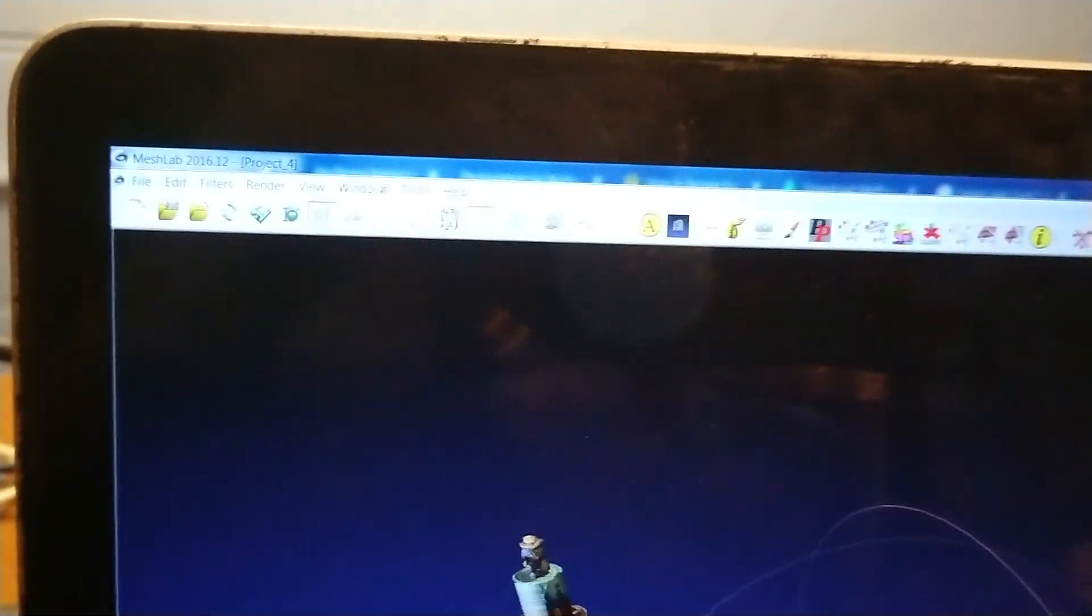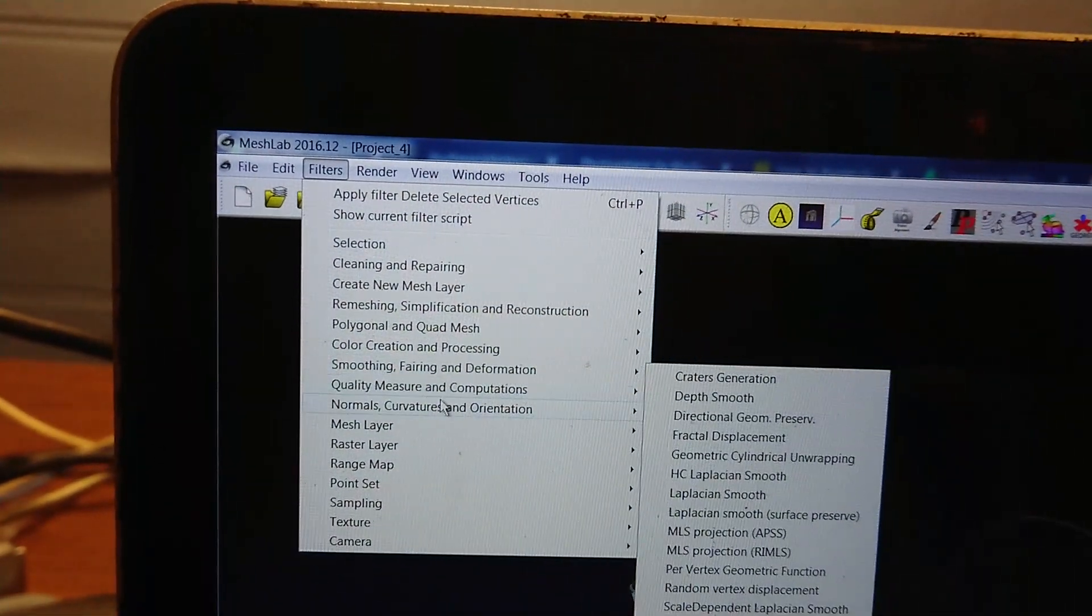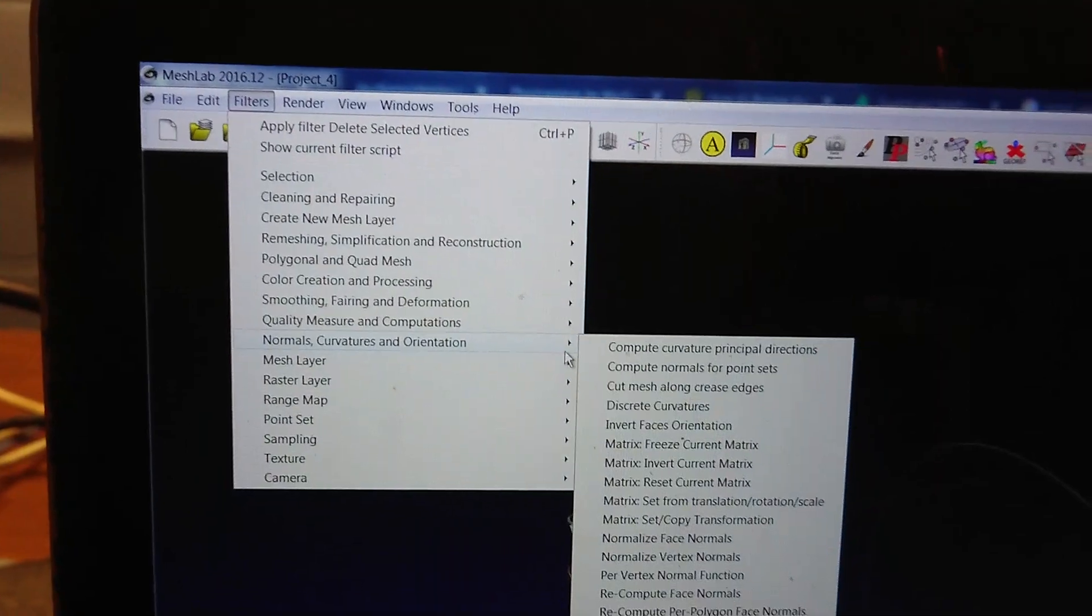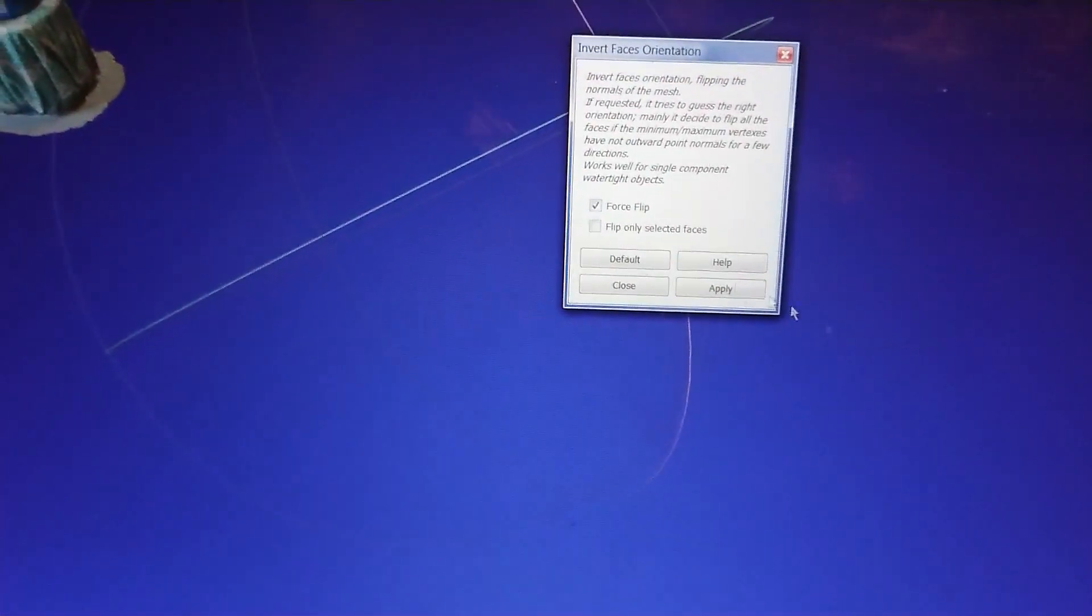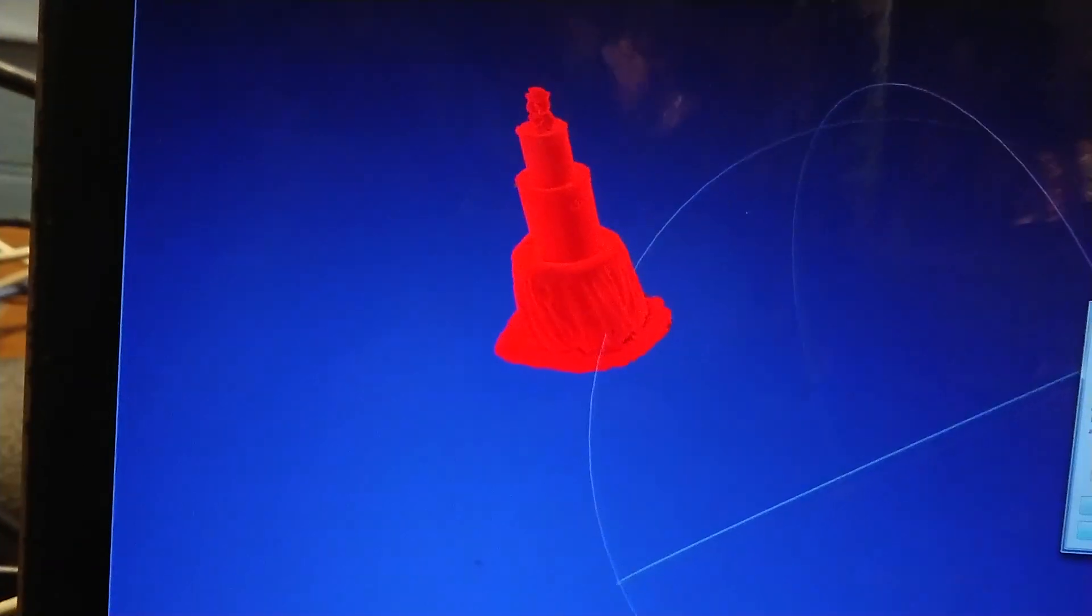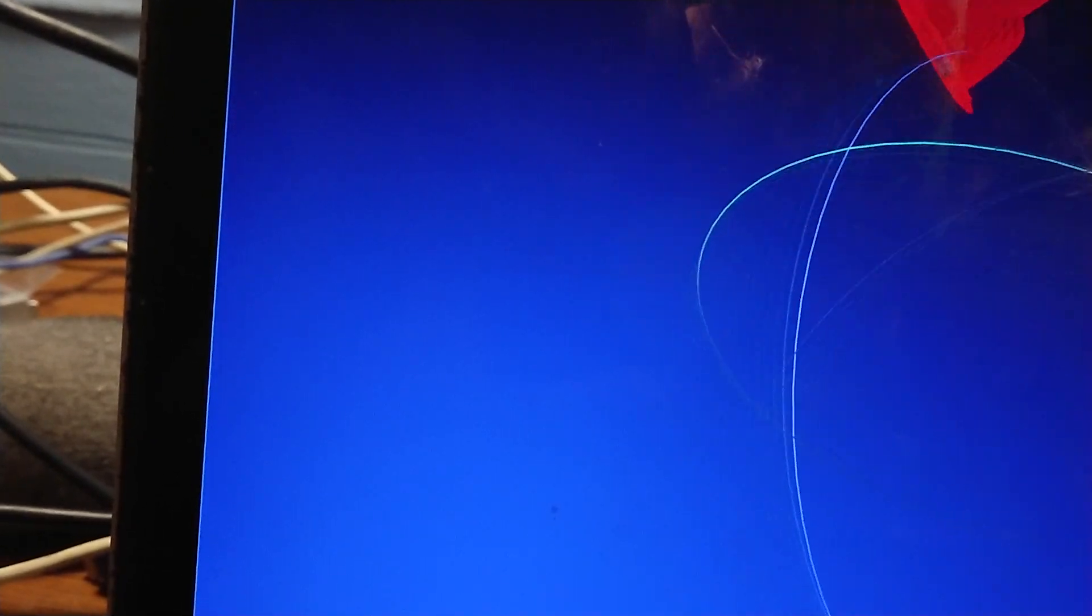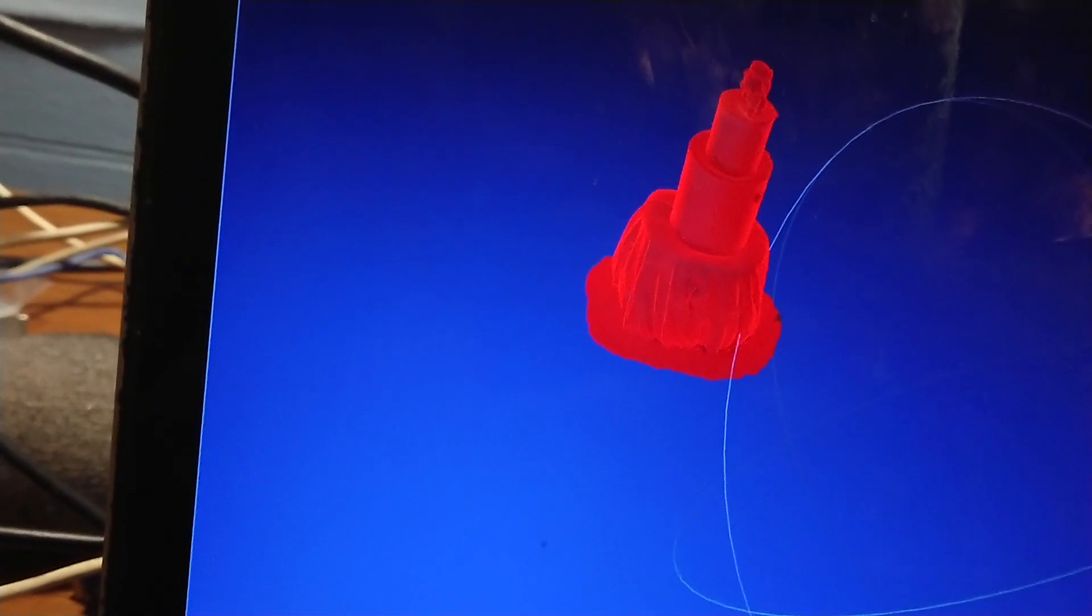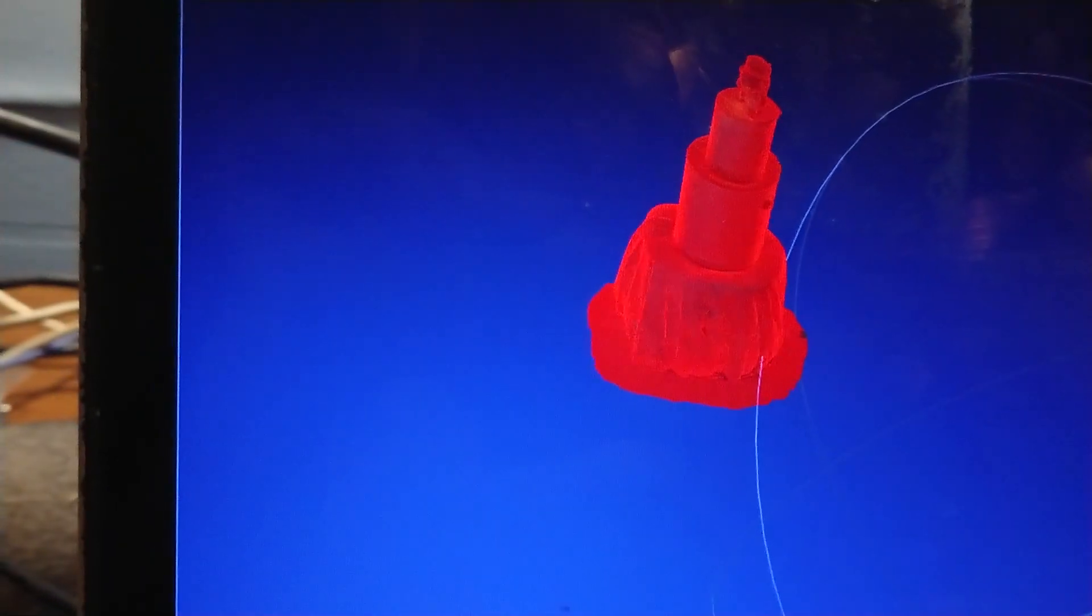So I go to filters and I go to the one that talks about normals and then I choose invert faces orientation. And then it gives me another little dialogue box. I just hit apply. Everything gets kind of just dismal looking. But then it lets us actually have the particles bounce on the inside of the thing instead of normal.